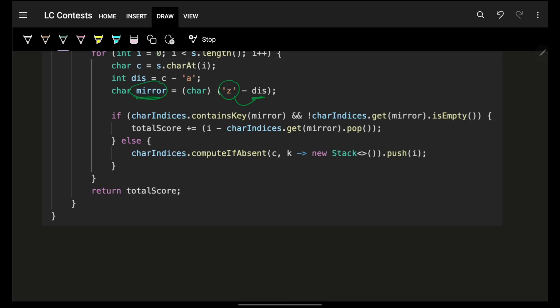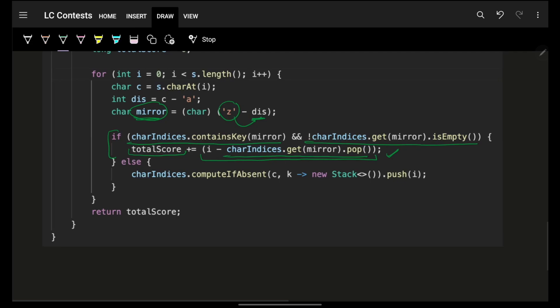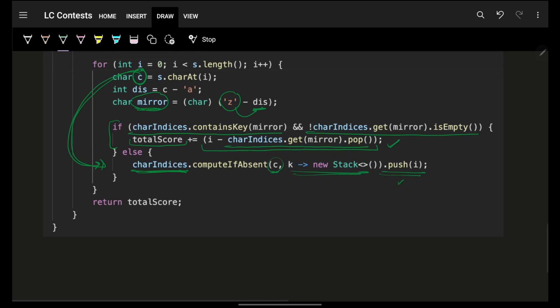Now, to find the mirror, go from the backwards with the same distance, get the mirror character. Now, I have the mirror character with me. Firstly, I will check in my hash map, do I have a mirror character? If yes, then get me the topmost value of the stack, which means that the stack should not be empty. If the stack is not empty, then I know I have some specific index at the top of the stack. I will pop that specific index, subtract from the current index. I will get the current score. I will add in the total score and I will move forward. But what if I did not have anything for it? No worries. So, for the current character, simply push that in the stack. Ultimately, getting a total score.